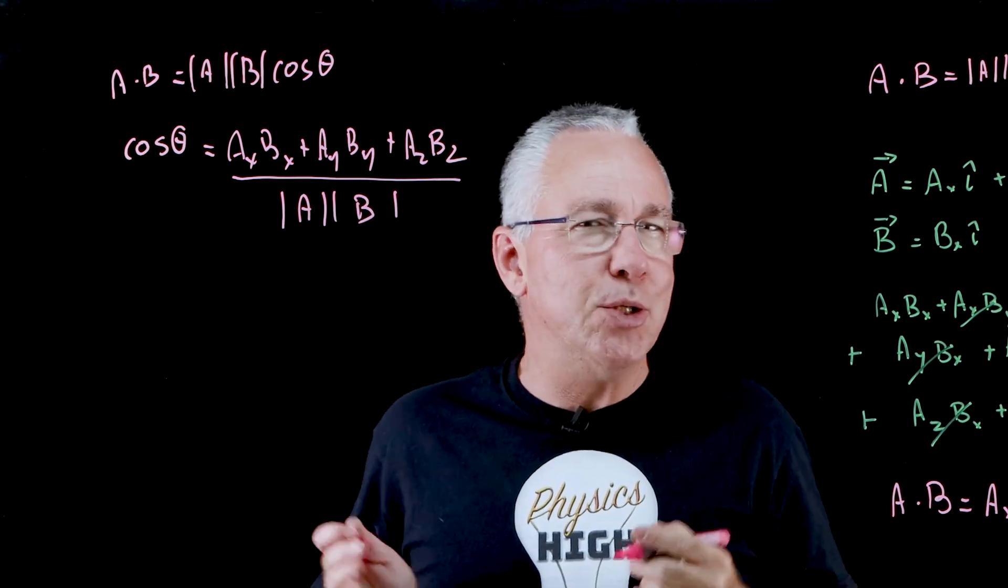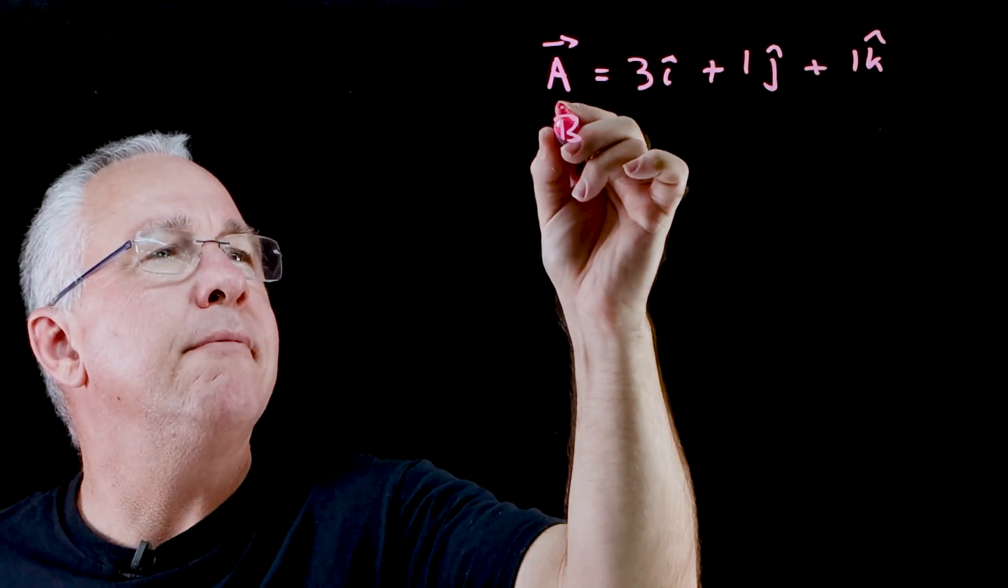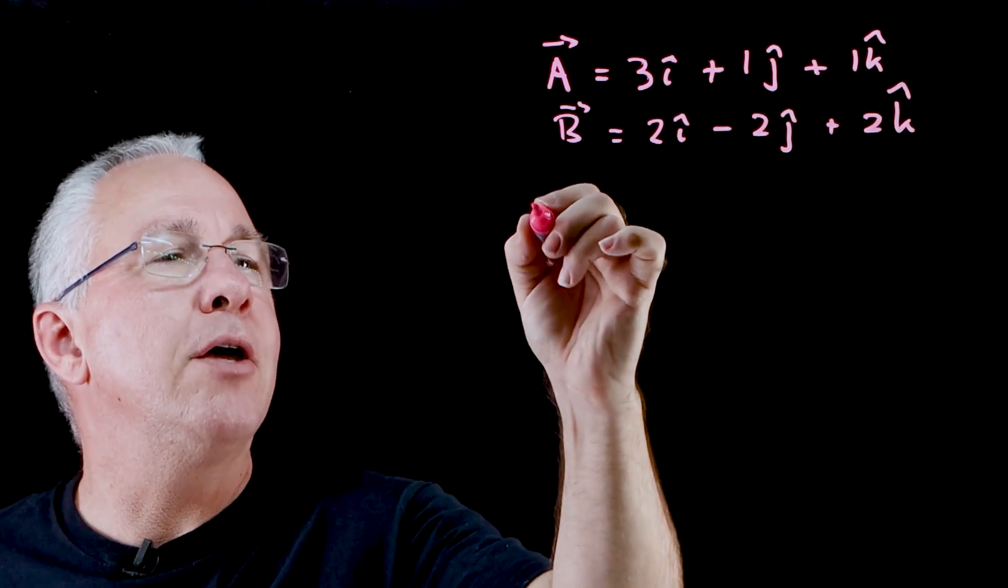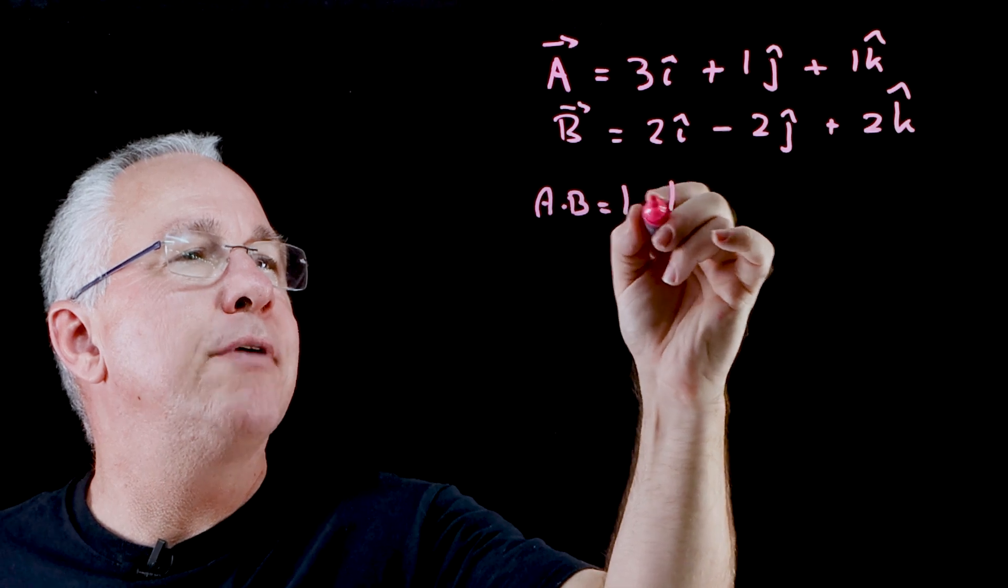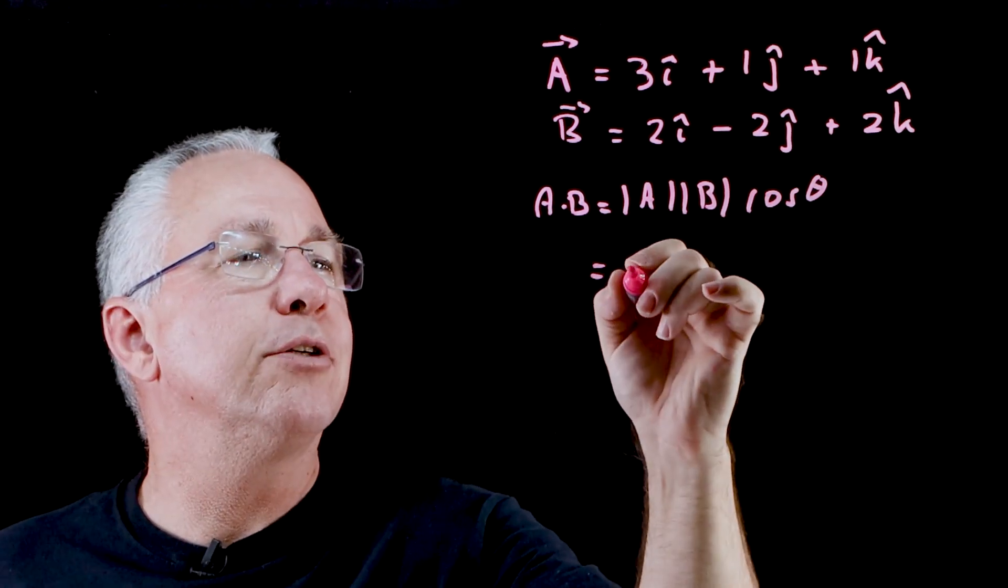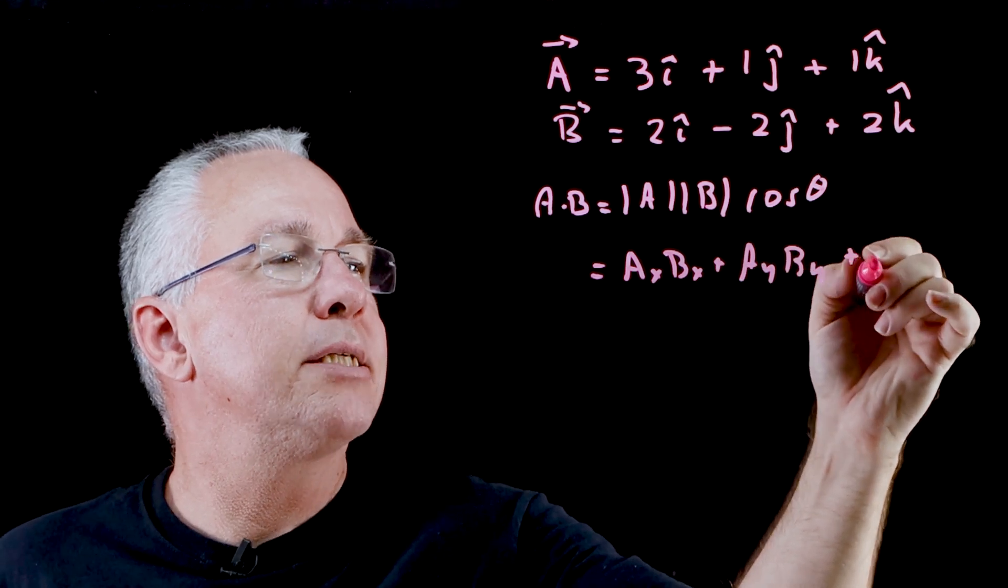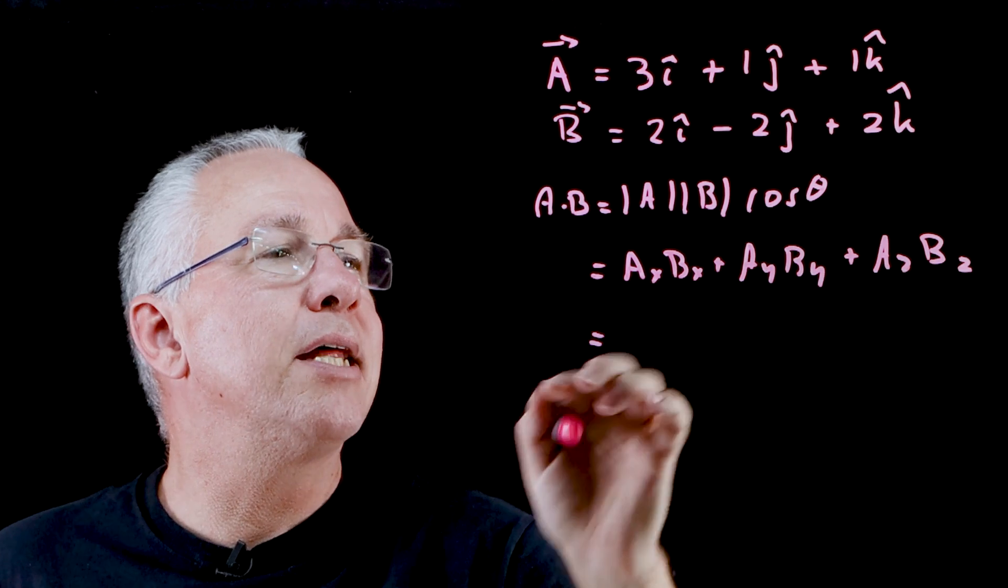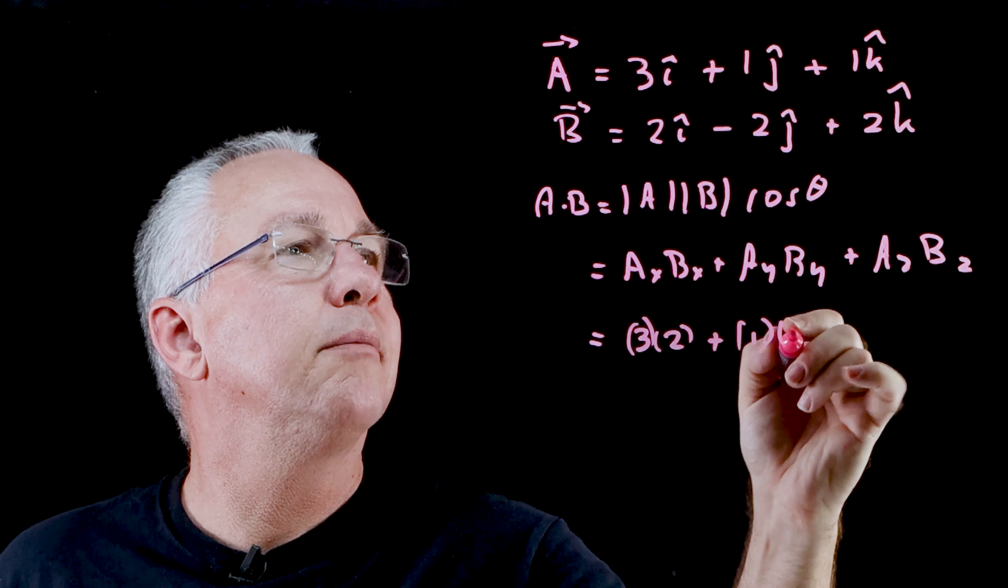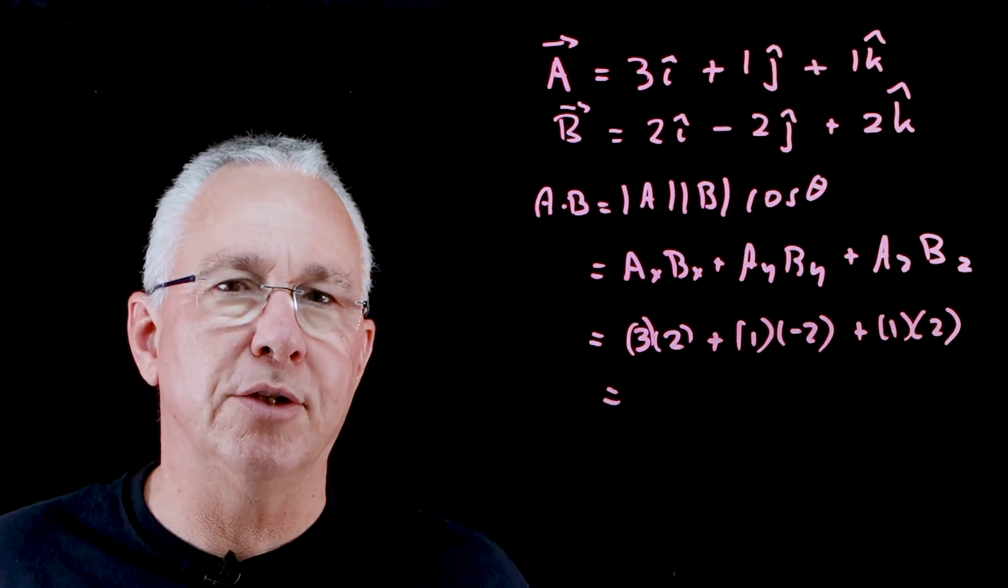So now let's put that into practice. Let's say I have vector A and vector B. So how would I do this? First of all, let's work out the dot product. We know that A dot B is equal to the absolute value of A multiplied by the absolute value of B multiplied by the cosine of theta. But it's also equal to A_X B_X plus A_Y B_Y plus A_Z B_Z. And so that is going to be equal to 3 times 2 plus 1 times negative 2 plus 1 times positive 2. That's going to be equal to 6.